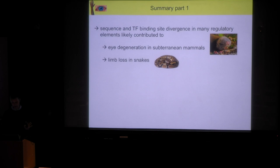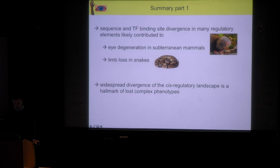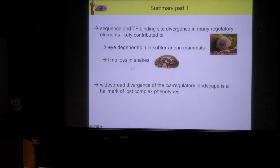To sum up the first part: I showed you methods that detect sequence divergence and transcription factor binding site divergence in putative regulatory elements. We found hundreds of such elements with increased sequence and binding site divergence that likely contributed to eye degeneration in subterranean mammals and to limb loss in snakes. Looking at two different groups of species and two different types of traits and seeing the same picture twice argues that widespread divergence of regulatory elements is likely a hallmark of losing complex traits, which require many regulatory elements and many genes to properly develop.